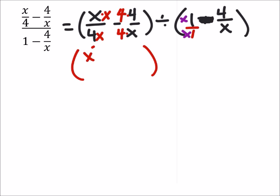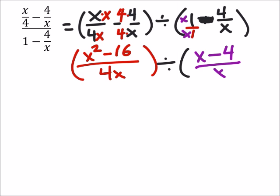Into x squared minus 16 all over 4x, and this is being divided by x minus 4 over x.